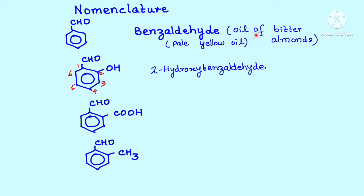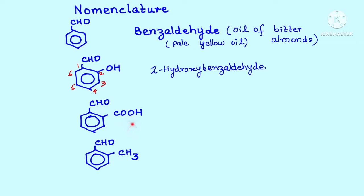By the way, benzaldehyde is also known as the oil of bitter almonds, because it is a major constituent obtained from almonds. Interestingly, because of its special aroma, it is also used in perfumery as well as added to some foods. Let's go on to the next one.